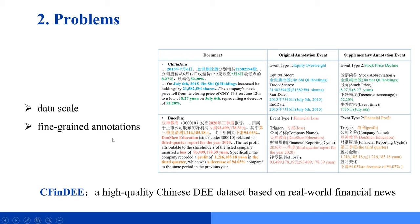As illustrated, current datasets fail to fully encompass key events within the financial domain. To address this gap, we introduce Safeine DE, a high-quality Chinese document-level event extraction dataset for the financial sector.